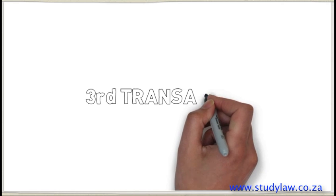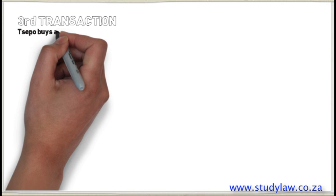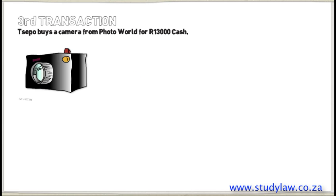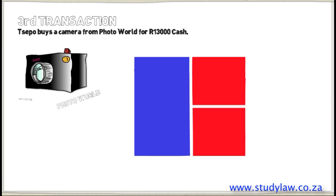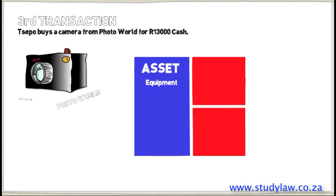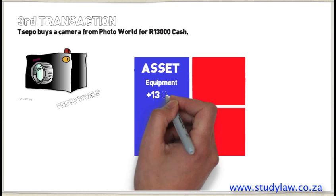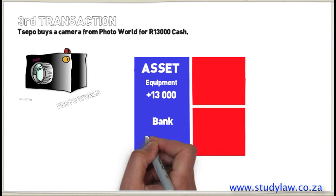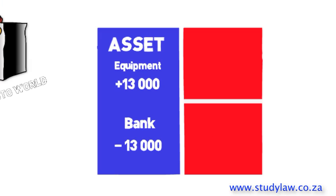The third transaction is when Seppo's business buys a camera from PhotoWorld for R13,000 and pays cash in full. When Seppo buys the camera, he is gaining an asset in the form of equipment worth R13,000. When he pays cash, money is leaving the company's bank account, so his bank will decrease by R13,000.